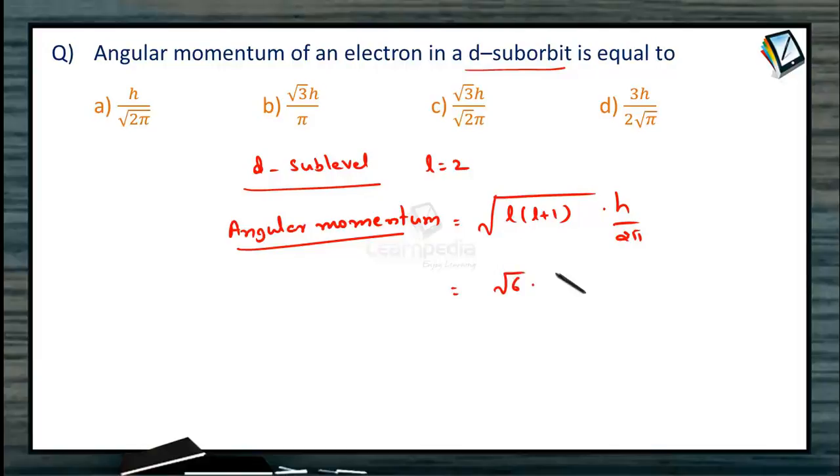But the options given are h/√(2π), √3 × h/π, √3/√(2π). Can we write this as √6 × h/√(4π)? 2 is nothing but √4. So this is h/π, and thereby we have √6/√4 which is nothing but √3/√2. That is the reason why C is the answer.